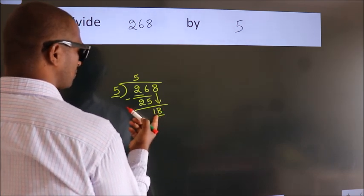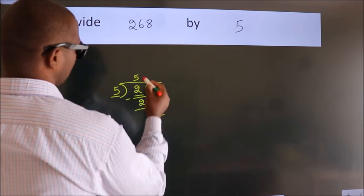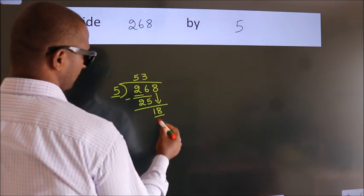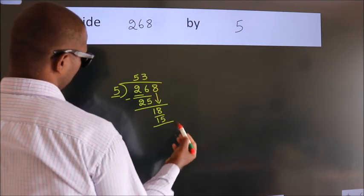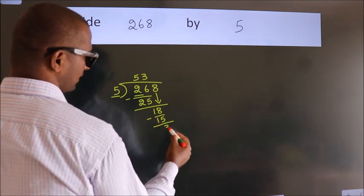A number close to 18 in the 5 table is 5 threes, 15. Now we subtract. We get 3.